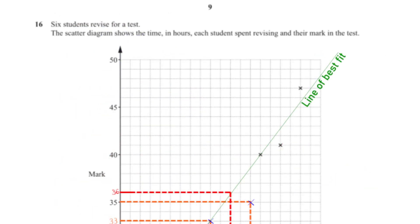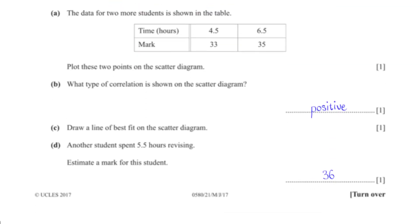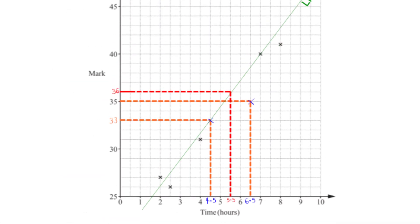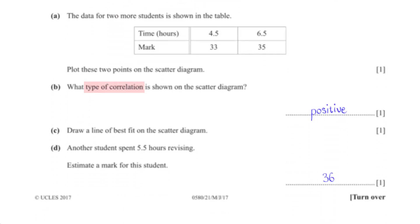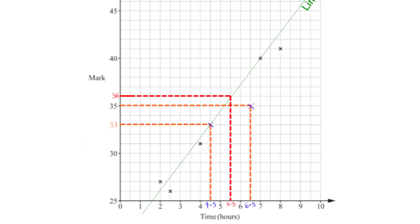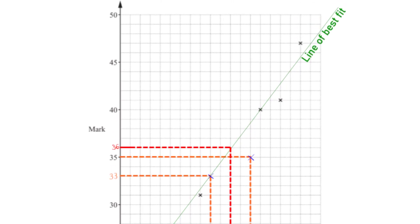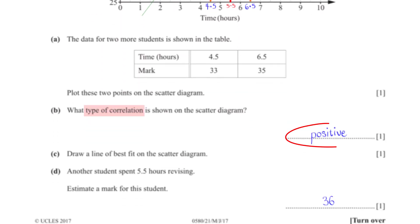Six students revise for a test. The scatter diagram shows time spent revising versus marks. We plot two additional points: (4.5, 33) and (6.5, 35). What type of correlation is shown? A general increase in time results in a general increase in marks, so this is positive correlation.